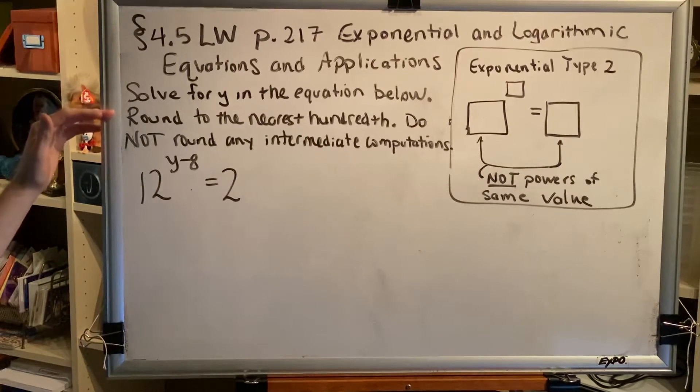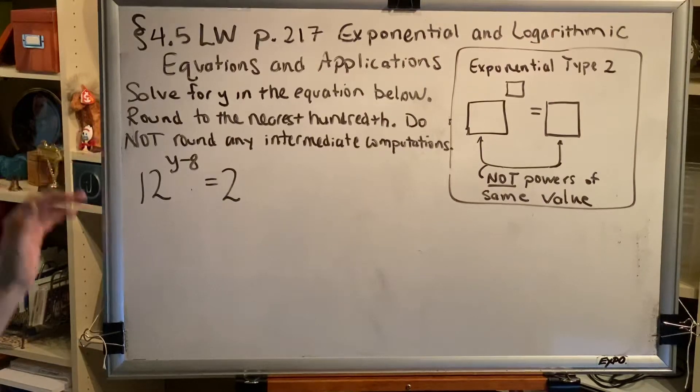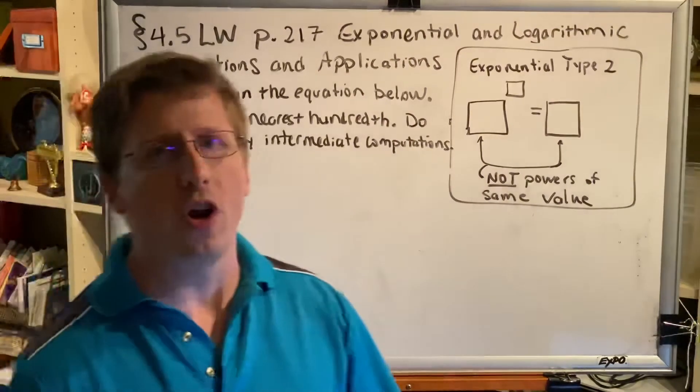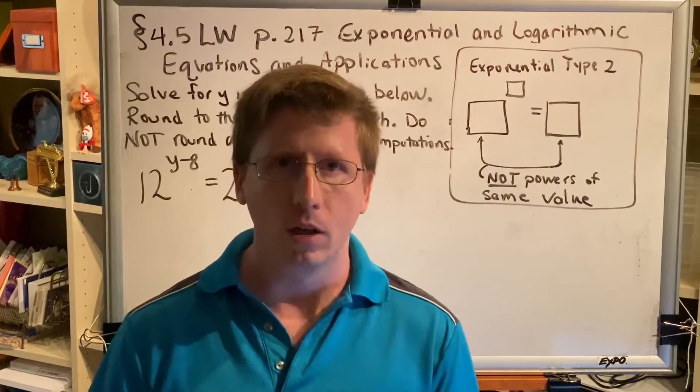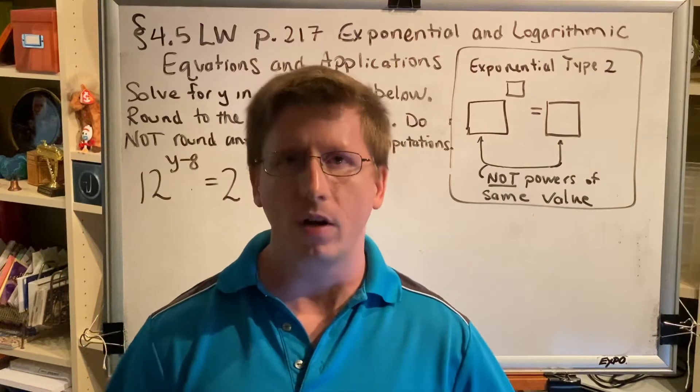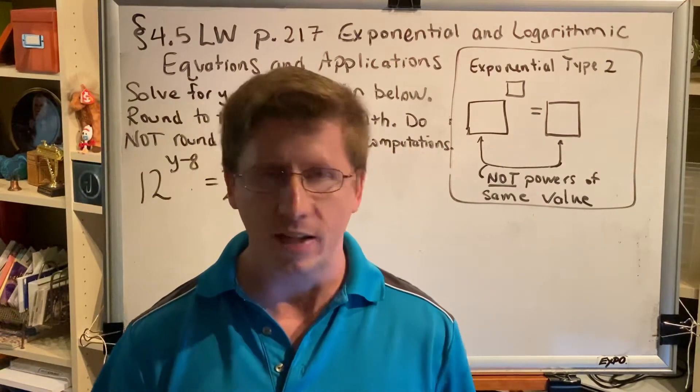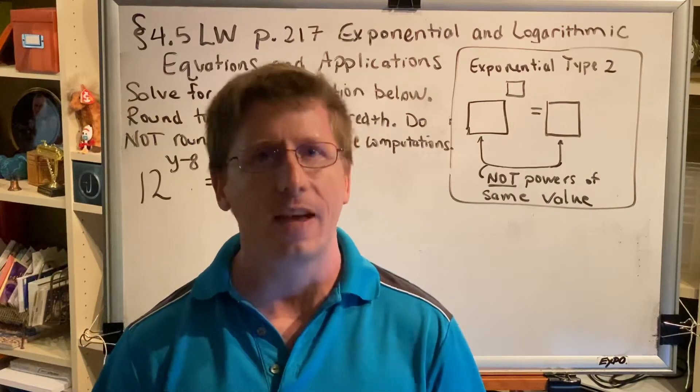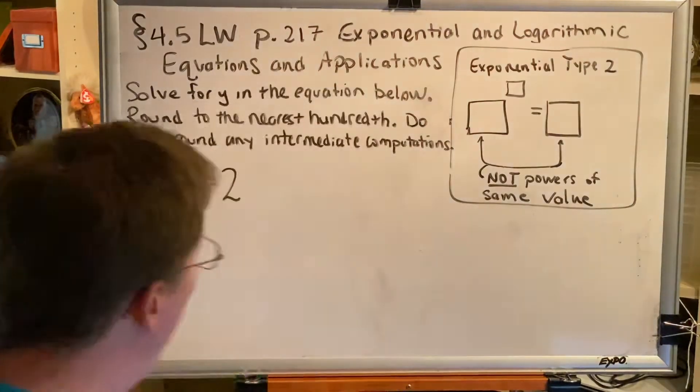Let's read the directions: solve for y in the equation below, round to the nearest hundredth, do not round any intermediate computations. What that means is that you are not permitted to round your answer at any point in the middle of the problem. You can only round your answer once you get to the very end, so no decimal approximations for anything in the problem until you get to the very end.